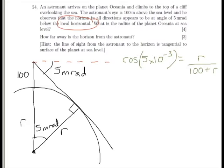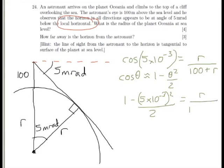One of the trigonometric approximations that we should know is that for very small angles, which this certainly is, cos theta is approximately equal to 1 take away theta squared divided by 2, as long as our angle is in radians. Therefore, we can say that 1 take away 5 times 10 to the minus 3 squared, divided by 2, equals r divided by 100 plus r.